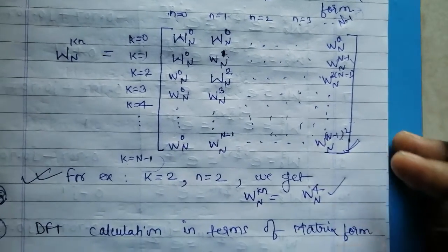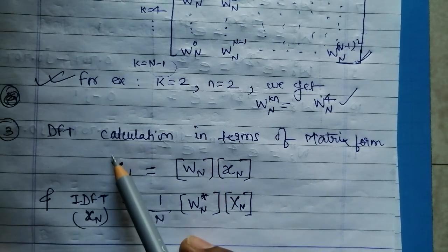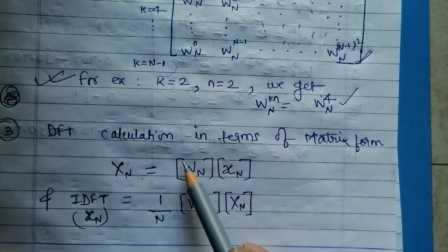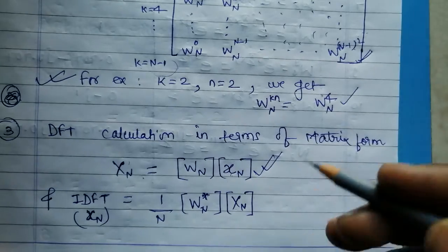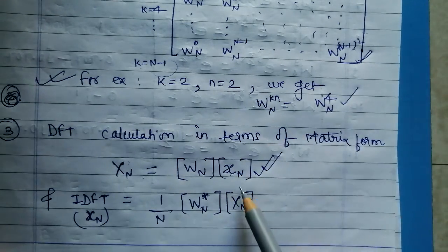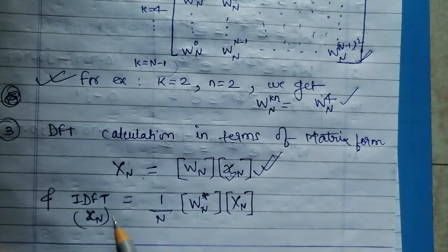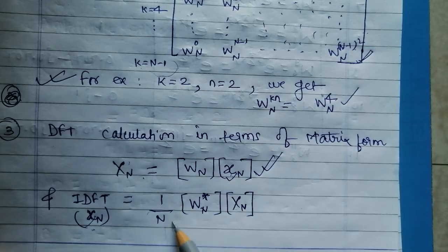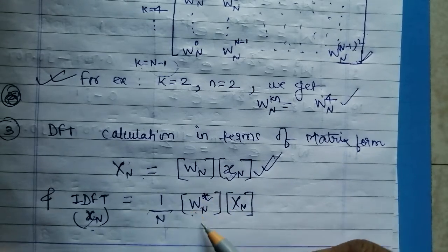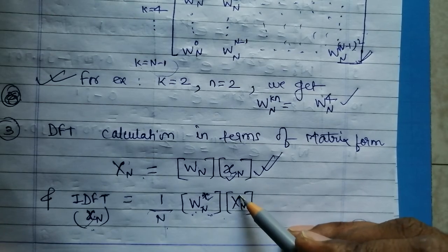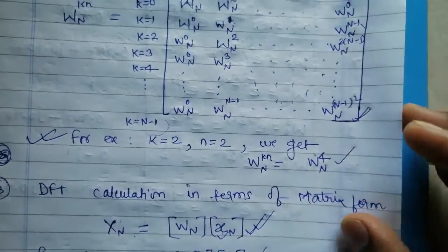We can represent the DFT in matrix form: the DFT output X equals the twiddle factor matrix W multiplied by the input sequence x. For the Inverse DFT, x(n) equals (1/N) times the conjugate of the twiddle factor matrix W* multiplied by the DFT output X. This way we can find both the DFT as well as the IDFT using the twiddle factor matrix.